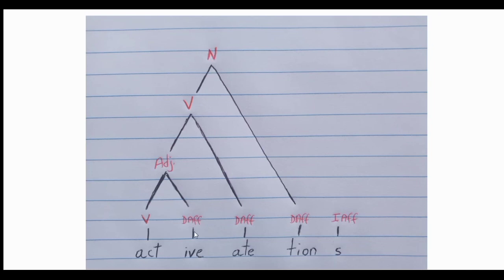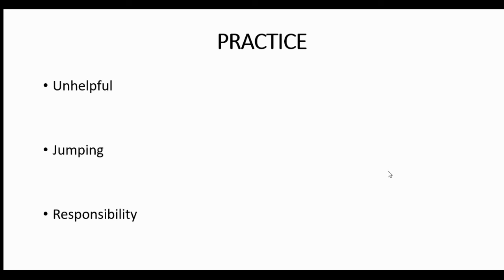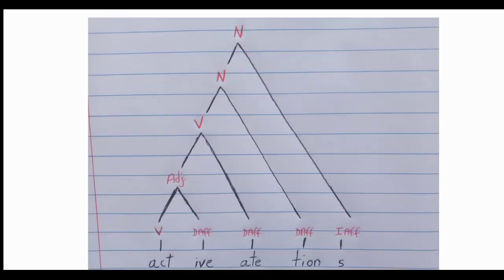The noun is 'activation'. Finally, you link that noun with the inflectional affix '-s' to get the same noun but in plural — 'activations'. Remember that inflectional affixes tell you a grammatical function in the word. Now you can see the different steps you need to follow in order to draw morphological trees correctly.